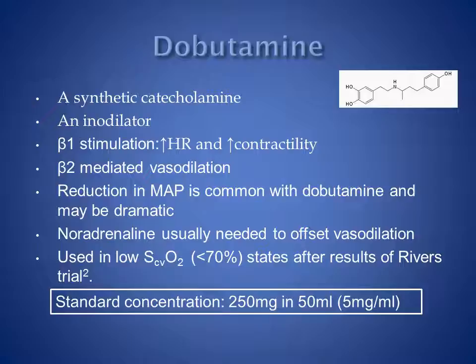Dobutamine's principal use now is in patients with sepsis who have a low central venous oxygen saturation — less than 70%. Its use is based on the results of the RIVERS trial of early intervention in patients with sepsis. In our unit, dobutamine is made up as 250 mg in a 50 mL syringe, giving a concentration of 5 mg per mL, and it's usually used in conjunction with a noradrenaline infusion.